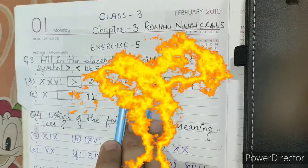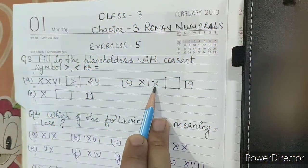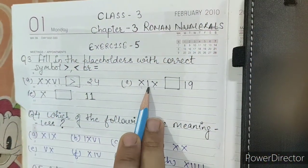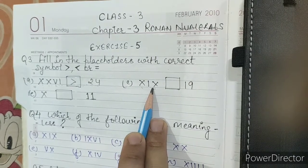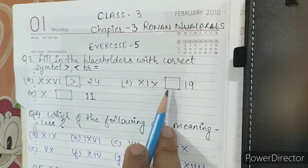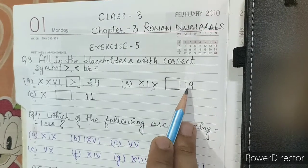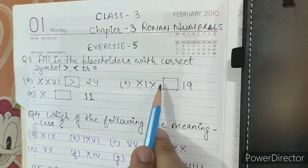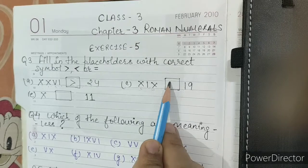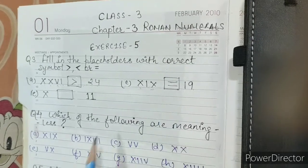Now XIX means 10 and IX means 9, so 19. And here is also written 19. It means both are same, so we will write the equal sign.